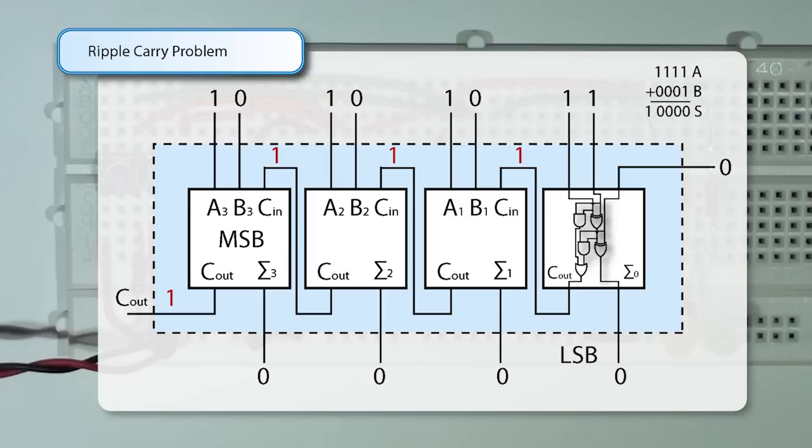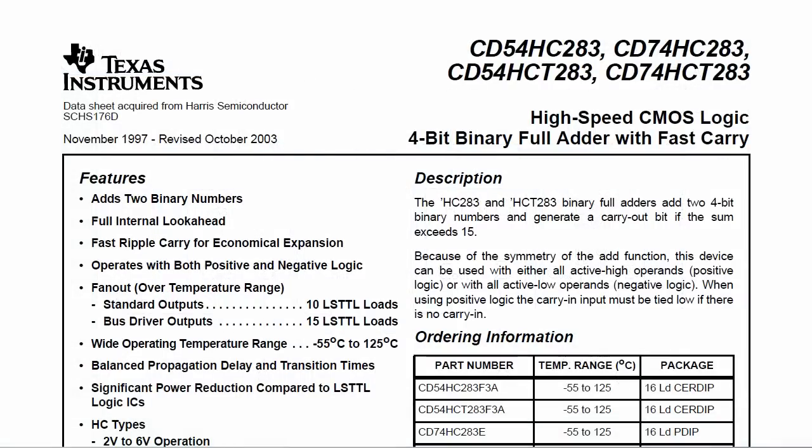For my circuit I'm going to use a CD74HC283, which is a 4-bit adder with fast carry. Essentially this means that there's a carry look-ahead adder where there's additional circuitry to detect if there's a carry rippling through the full adders. This means that the ripple delay problem is somewhat reduced and that multiple 74HC283s can be used together economically, which is the way it's described in the datasheet.